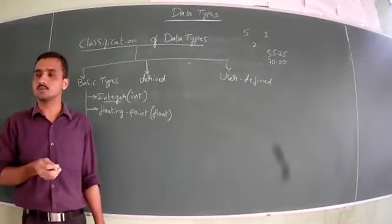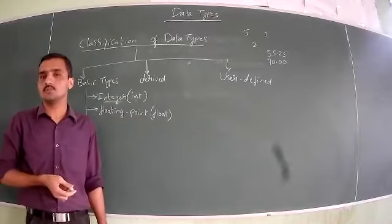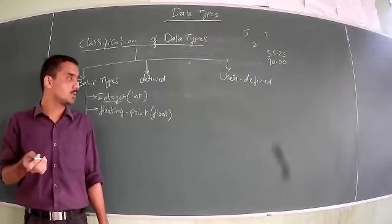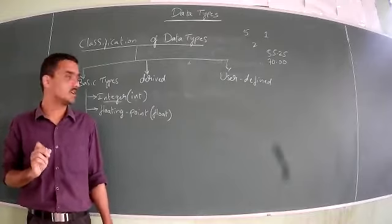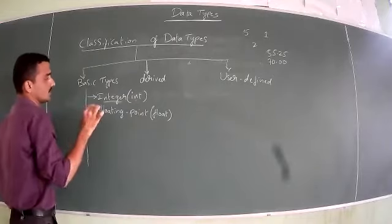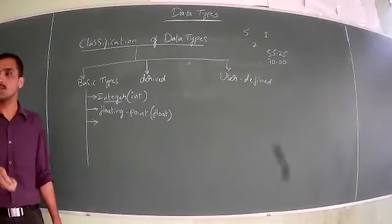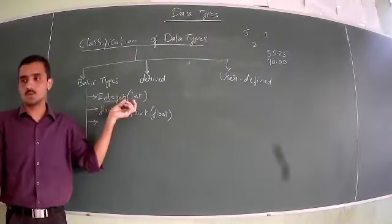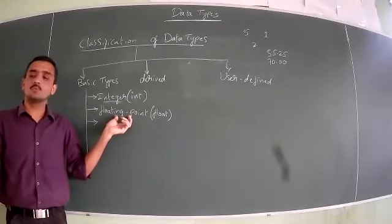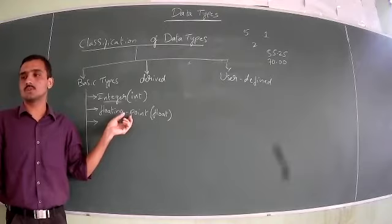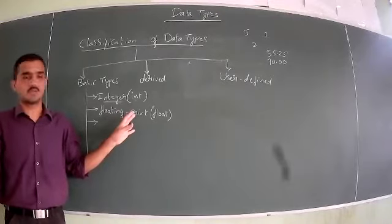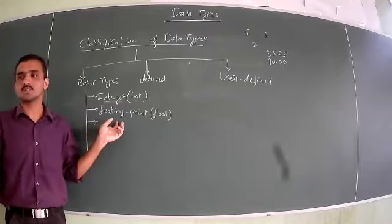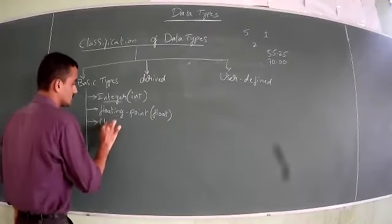If you remember the keywords, you can write the program and solve errors. So remember the keywords — you can write them down chapter by chapter as they come. Next, when you consider numbers like percentage values — 55.25, 70.00 — these are real numbers in mathematics, but in programming language they are called floating point numbers. Third, what we can consider is alphabets, which comes under the data type 'character'.